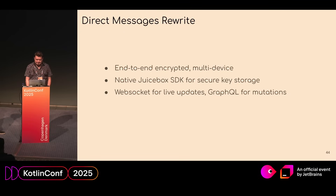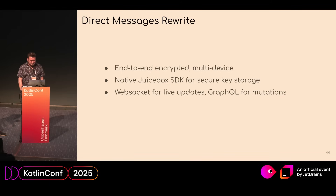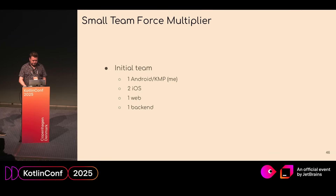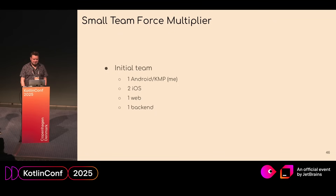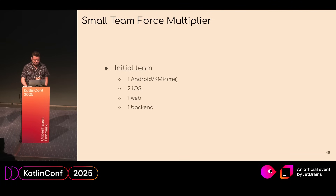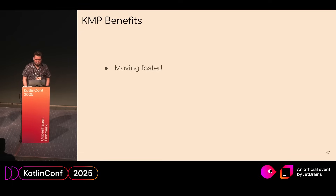We're using WebSocket for all live updates — the old direct messages feature just polled an endpoint every 10 seconds. GraphQL for all API calls, and SQL Delight for the database. This was a very small team initially. When we started about a year ago, the total number of Android engineers at the company was five. On the direct messages team it was just me — the Android and KMP guy — plus two iOS engineers, one web engineer, and one backend engineer. Starting from such a small team, it was a huge speed win to use KMP and write all that logic once in one place.